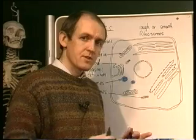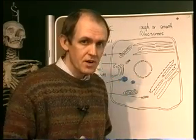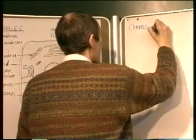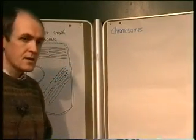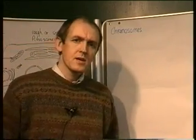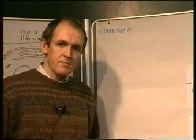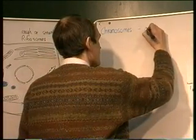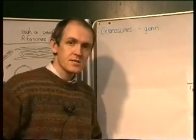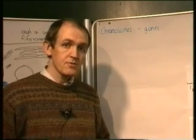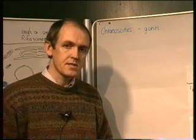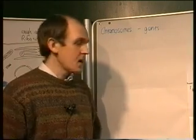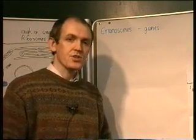There are organelles inside the nucleus — these are the chromosomes we've already referred to. Chromosomes are made up of two structures: first, a protein, but the important function is that chromosomes contain the genes. A gene is a unit of genetic information. There is a separate video on genetics, so we won't go into great detail here, but the chromosomes found in the nucleus contain the genes.